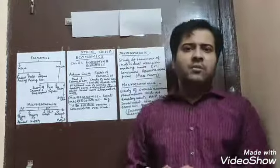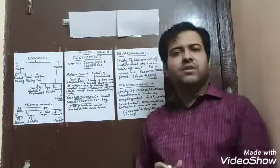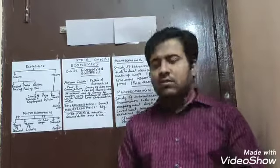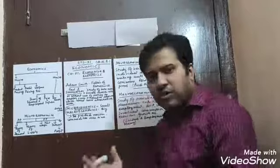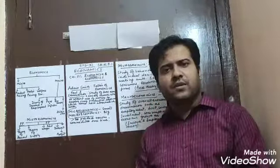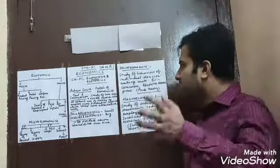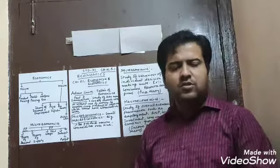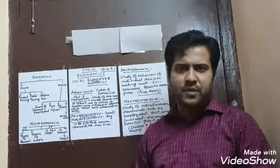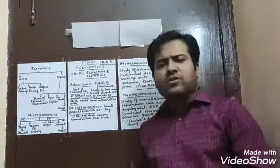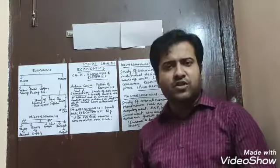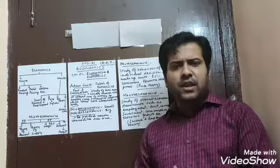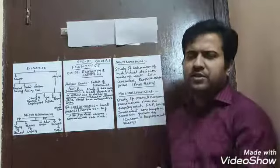Economics, as you are well aware, is the study of money and the study of values. Various economists have given different definitions from different angles. The earliest definition was given by the famous economist Adam Smith, who is also known as the father of economics. Other economists such as Robbins and Marshall also contributed, each with their own theories.